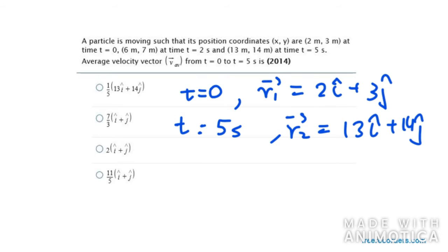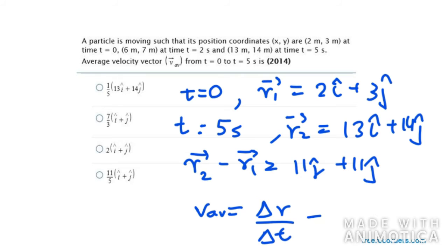Now we need to take displacement. Displacement is nothing but r2 minus r1. So this will be 11i cap plus 11j cap. And average velocity is nothing but displacement over time, so del r over del t. Del r is 11i cap plus 11j cap divided by 5. So the last option is the right answer.